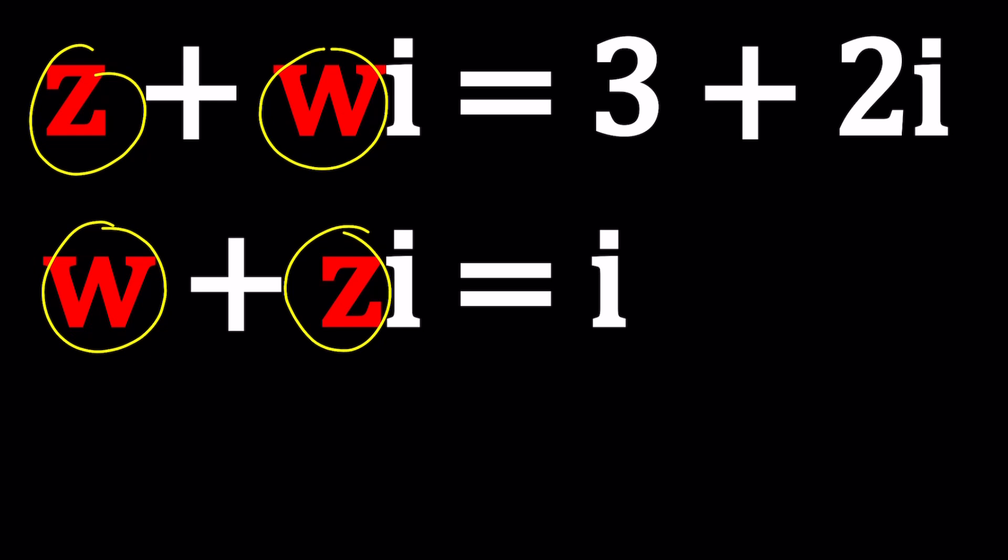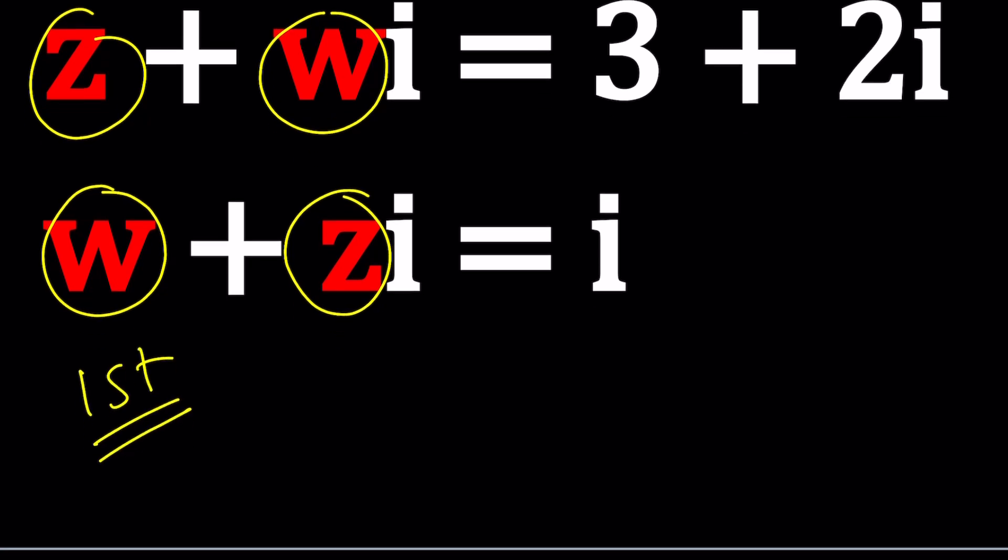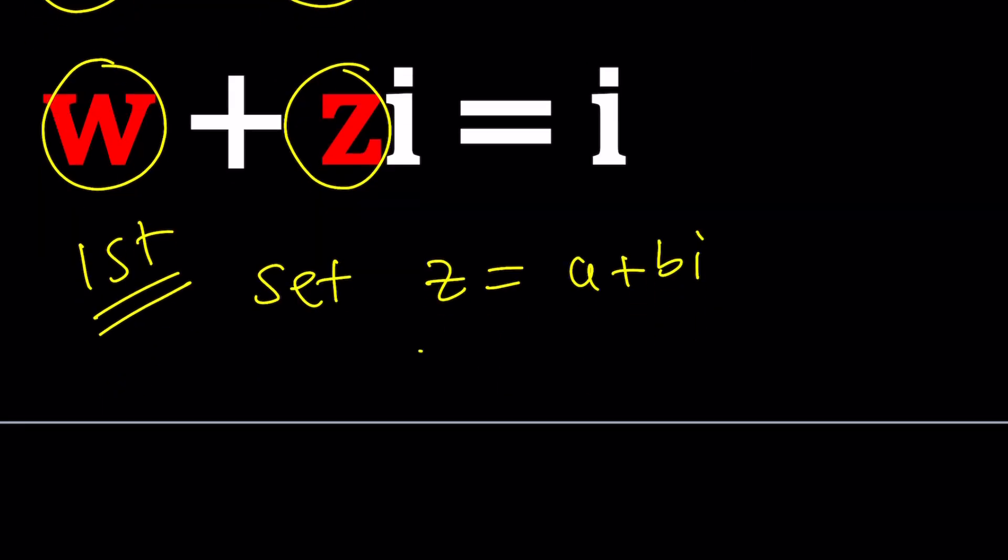So I'm going to start with the first method. Let's set z equal to a plus bi, and w equal to c plus di. Unfortunately, we have to use other letters as well. And now if you plug it in, you're going to get something like this.